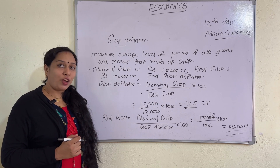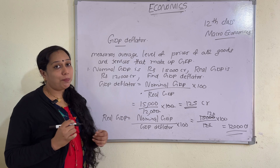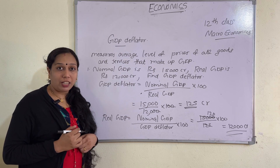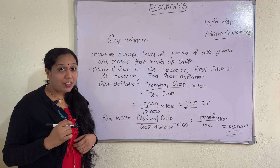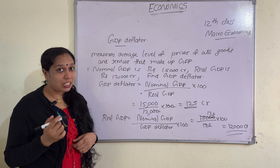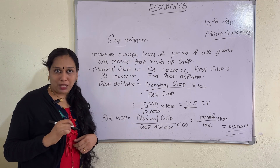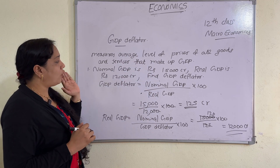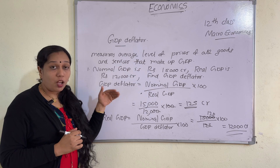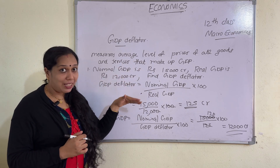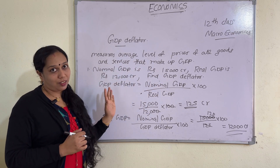Dear children, welcome back to Economic Mall. Now let's study the GDP deflator. The GDP deflator measures the average level of the prices of goods and services that make up GDP. The equation to find out the GDP deflator is: nominal GDP divided by real GDP, multiplied by 100.